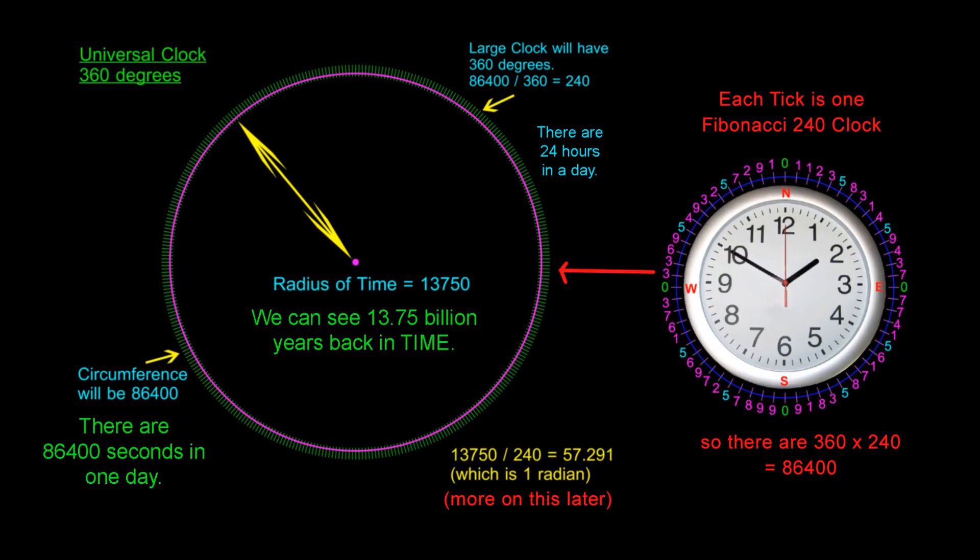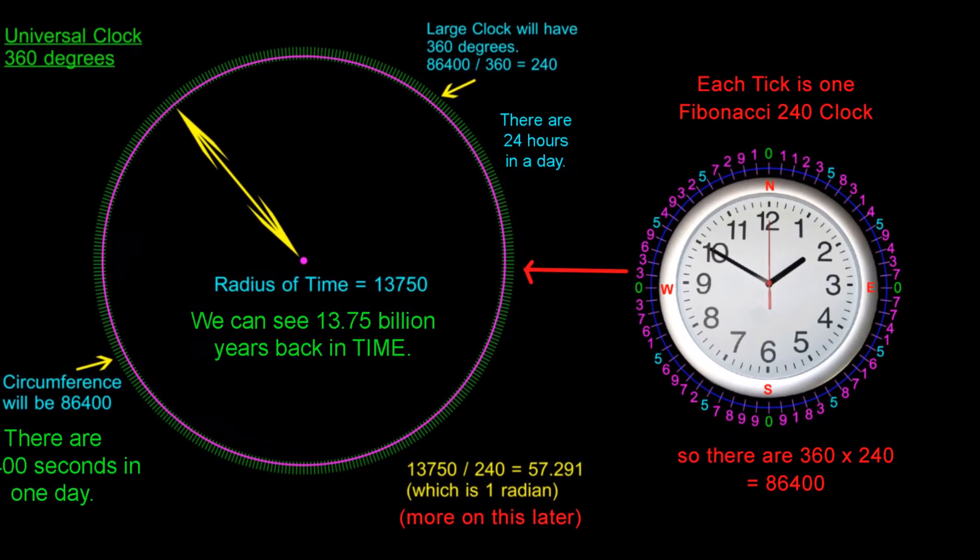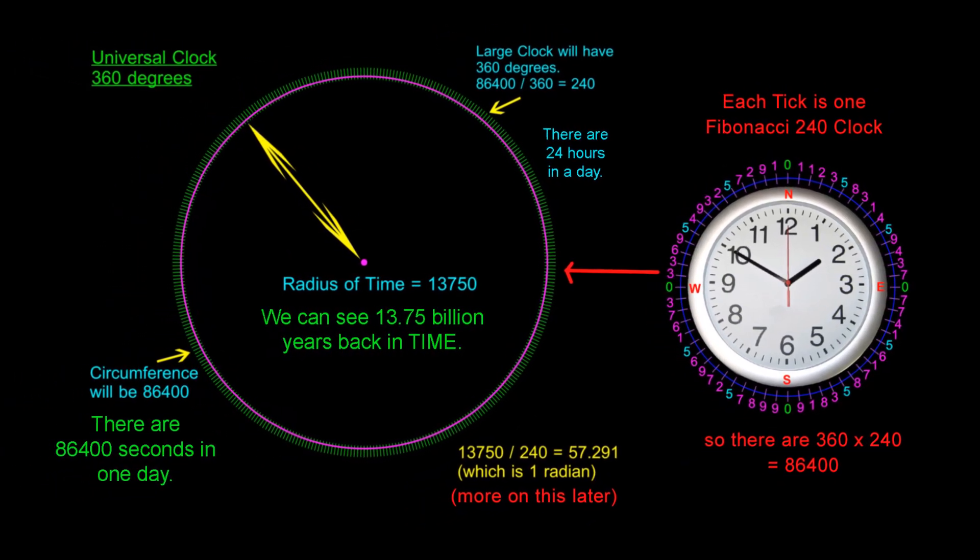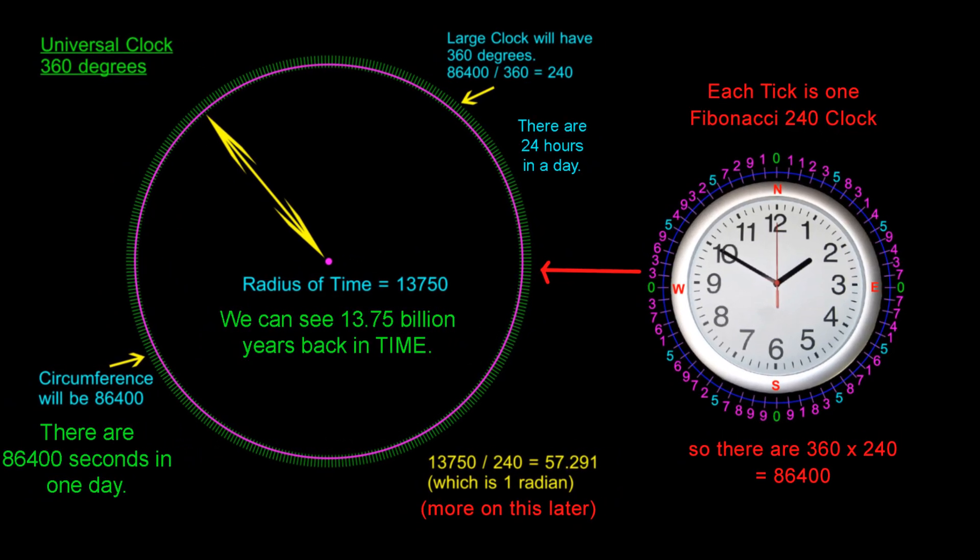Then I projected one Fibonacci cycle of time onto each one of those 360 degrees, and the result was this universal clock with a circumference of 86,400 units and a radius of 13,750 units.